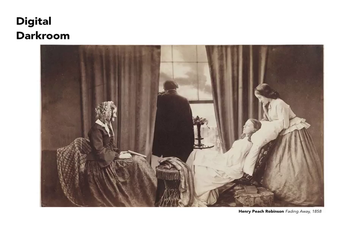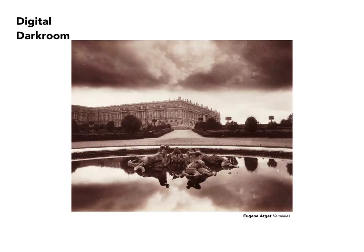All of this was in support of the notion of an unreal reality. Eugene Atget — we've discussed Atget quite a bit — tried, to anyone's knowledge, only once to achieve a double exposure. The intention was to give detail to the sky, but it apparently wasn't something that Atget ultimately ended up believing in, because this is the only one of its kind that anyone knows of.